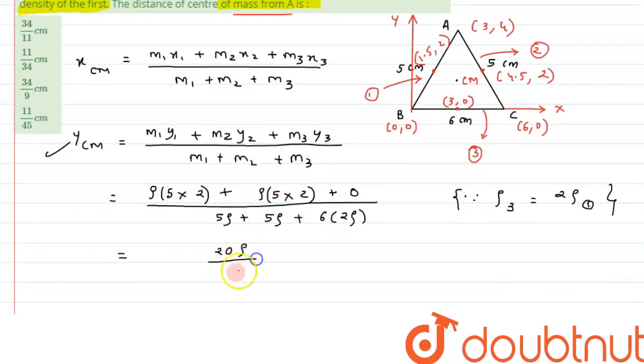20 rho and that's divided by this is 5, 12, 20 this comes out to be 22 rho and this comes out to be 10 upon 11 so this is the y coordinate of center of mass we are getting so this distance we have calculated from the bottom.